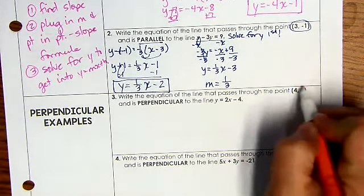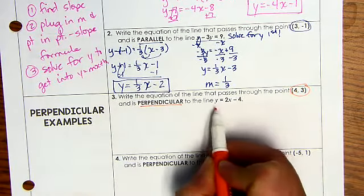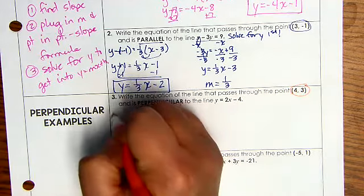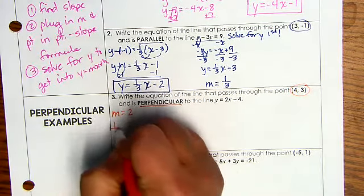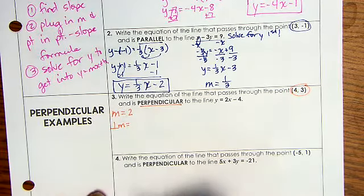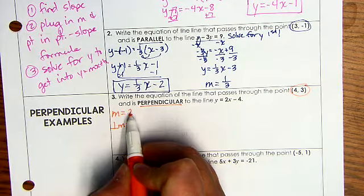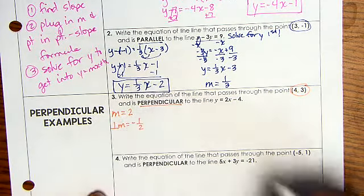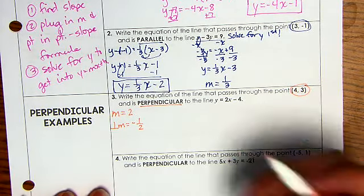Okay, number three, write the equation of a line that passes through this point but is perpendicular to the line y equals 2x minus 4. Well, my current slope is 2. My perpendicular slope is going to be the opposite of this sign-wise and flipped. So that's going to be negative 1 half.